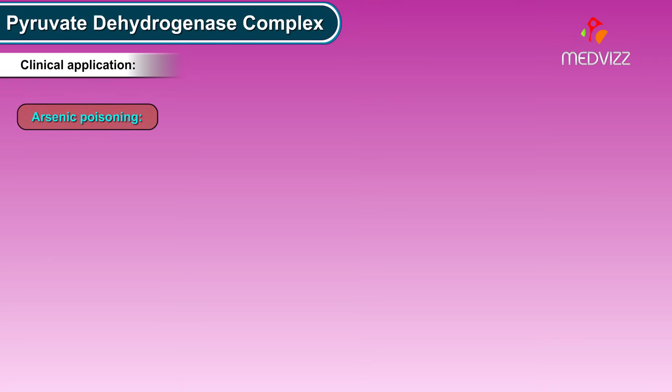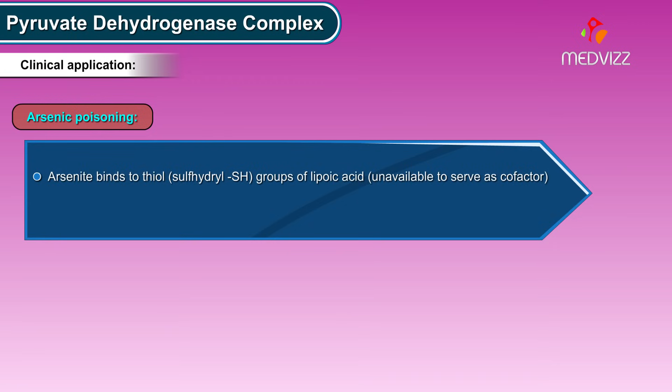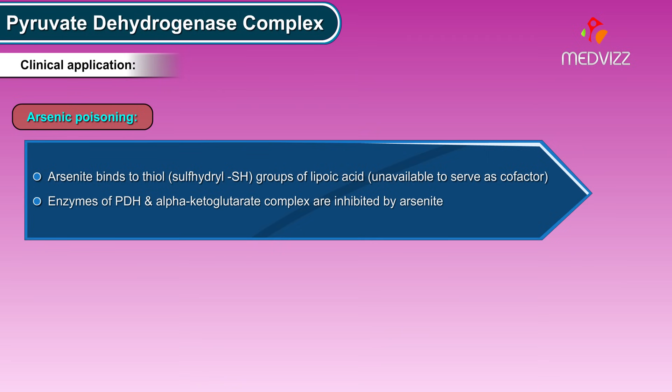Clinical application: Arsenic poisoning. Arsenite binds to thiol — the sulfhydryl group — of lipoic acid, making it unavailable to serve as a cofactor. In this way, the enzymes of the pyruvate dehydrogenase complex and the alpha-ketoglutarate complex are inhibited by arsenite.